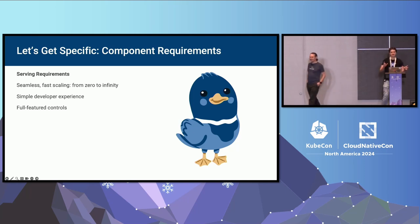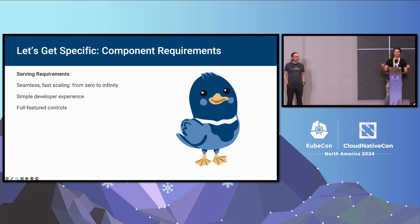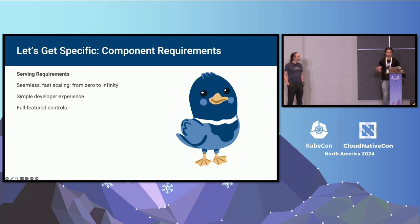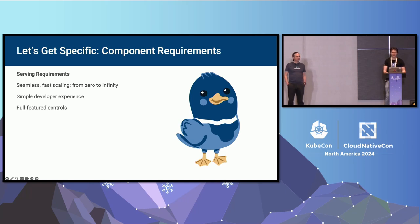We're going to go through each of the components one at a time and look at the main requirements for serving, then eventing, then build. For serving, the three biggest requirements were: seamless fast scaling all the way down to zero and up to as large as you need; the simple developer experience you get with Lambda and Heroku; and a lot of different controls over how everything works.